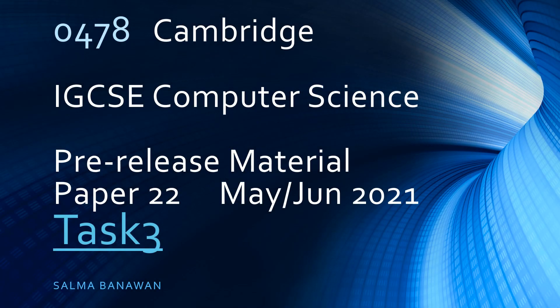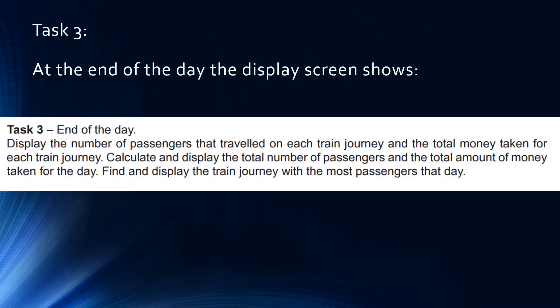Hi, I'm Salma Benawan, and I'm going to be presenting the complete task 3 in Python code. Let's keep in mind what task 3 is asking for. It's the end of the day: display the number of passengers that traveled on each train journey and the total money collected for each train journey. Calculate and display the total number of passengers and the total amount of money taken for the day. Find and display the train journey with the most passengers that day.